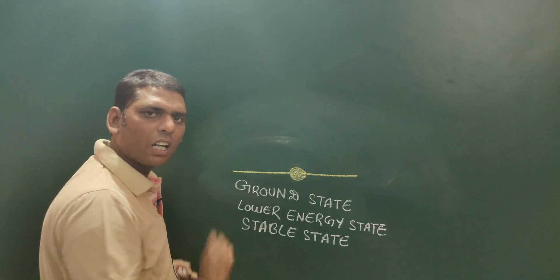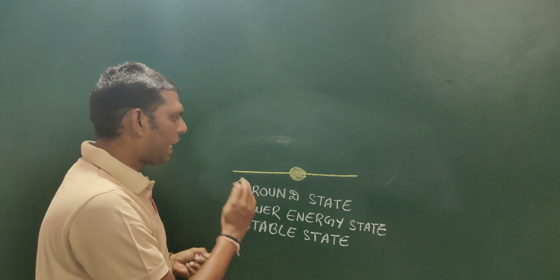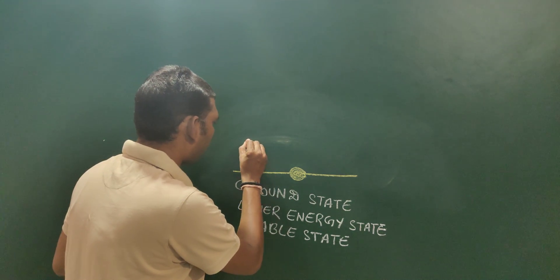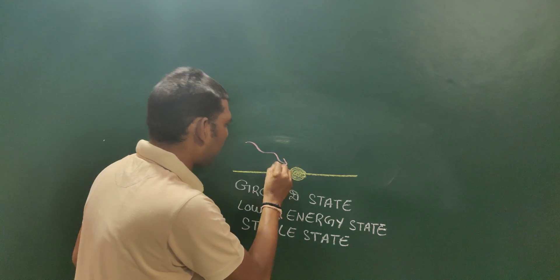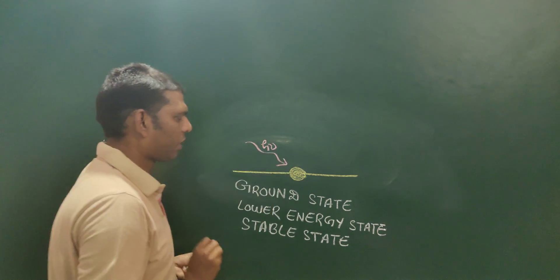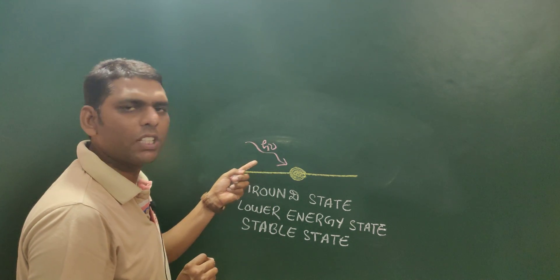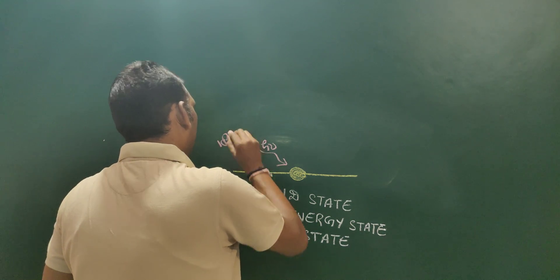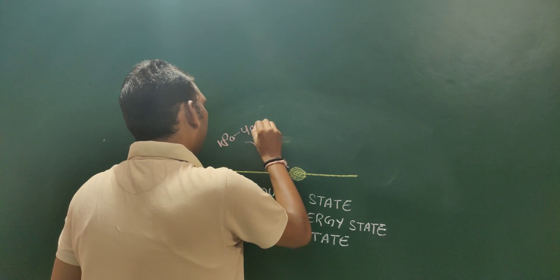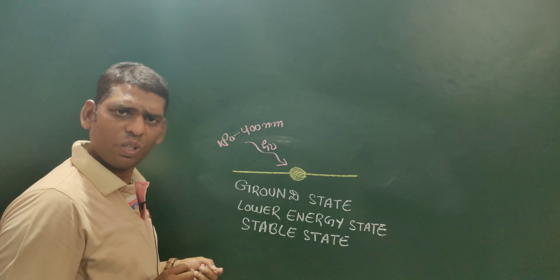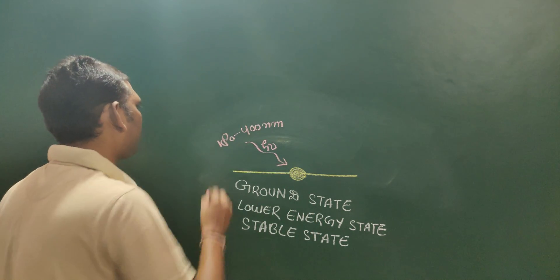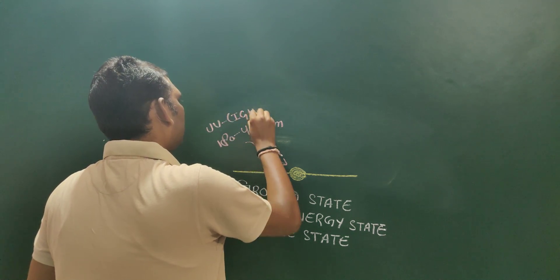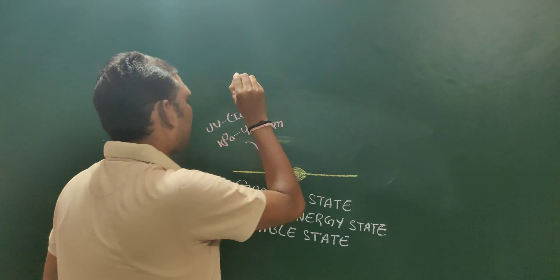In the next step, we are going to provide energy to the molecule which is present in its ground state. The energy should be in the form of radiation, that is hν, and the wavelength of this radiation is about 180 to 400 nanometers — this is the wavelength of UV light.